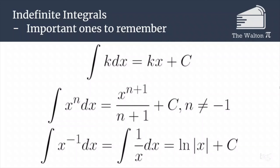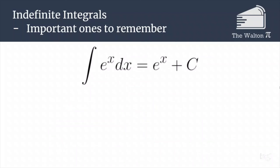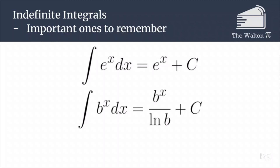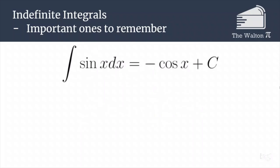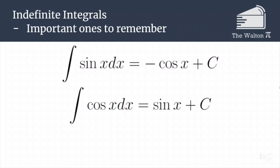All of these plus C's signify that adding any constant doesn't change the derivative. The integral of e to the x is just e to the x plus C. The integral of b to the x is b to the x over the natural log of b, plus C. The integral of sine x is negative cosine x, and the integral of cosine x is positive sine x, both with a plus C.